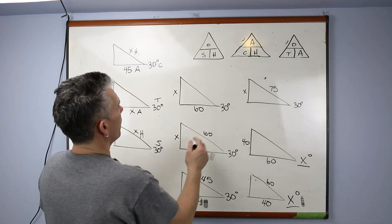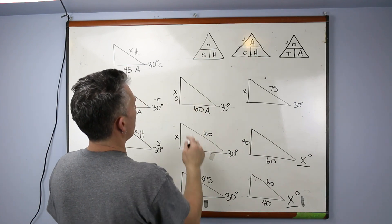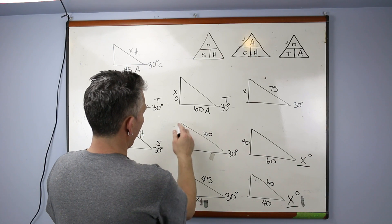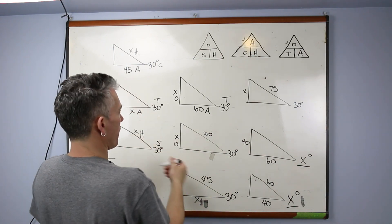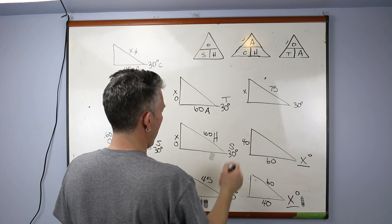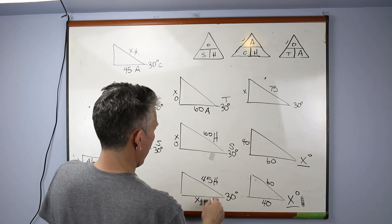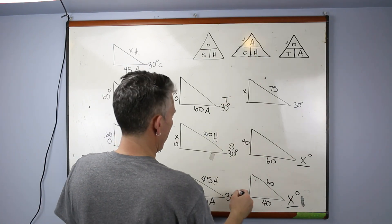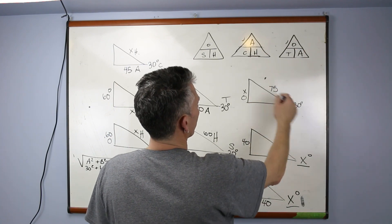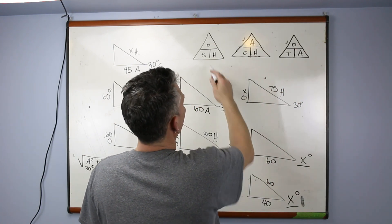Continue through the board. X on the side is opposite, this is hypotenuse — O and H means sine. Next: 45 is hypotenuse, bottom is adjacent — A and H means cosine. Next: X is opposite, 75 is hypotenuse — O and H means sine. Last two are trick questions where we need second function: 40 is opposite, 60 is adjacent — tangent question; 60 is hypotenuse, 40 is adjacent — cosine question.